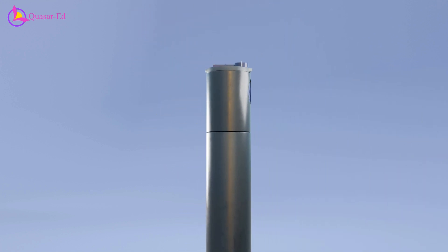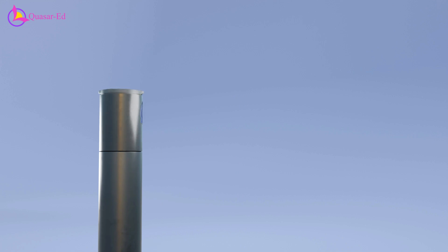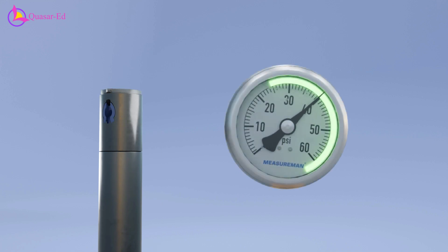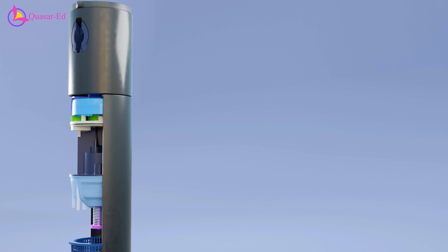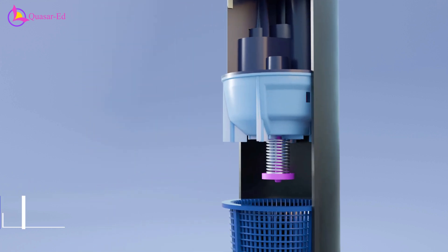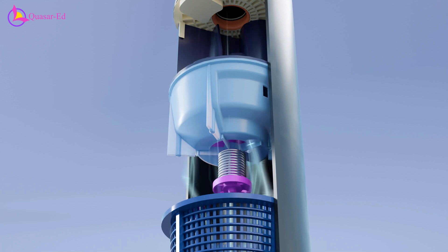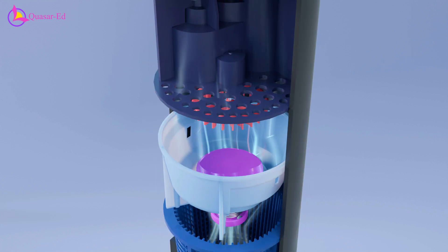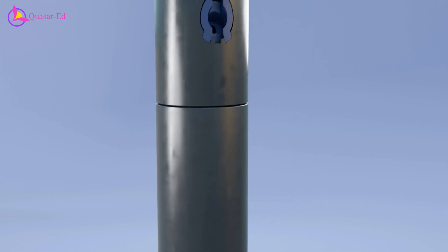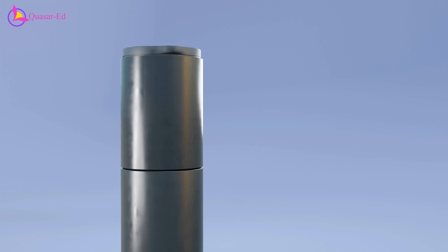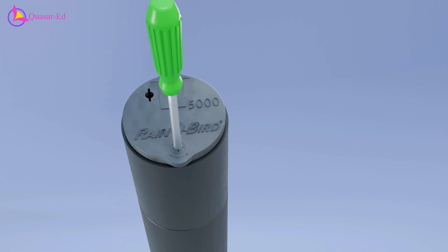To maintain a consistent spraying speed even with fluctuating water pressure, a spring-loaded valve is positioned beneath the turbine chamber to regulate pressure. When the pressure exceeds the designed limit, it pushes the valve against the spring, allowing excess water to flow out from the center without significantly impacting the turbine. Now that we understand how the upper part of the stem rotates at a consistent speed and how the angle adjustment screw sets the spraying range, let's look at another feature.